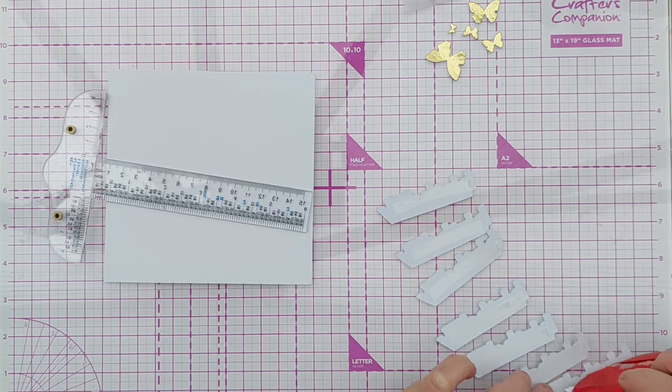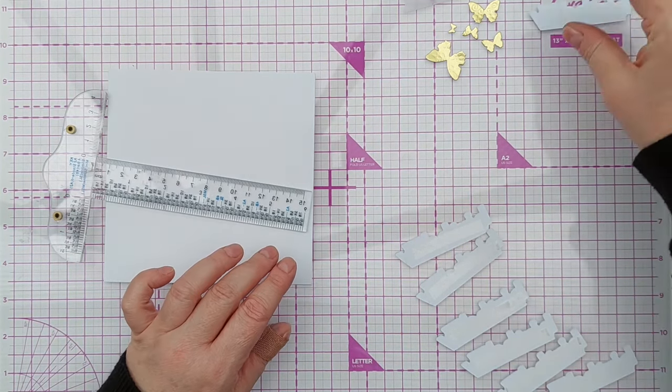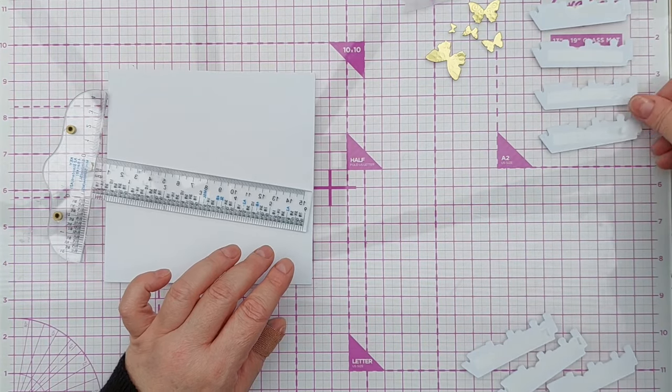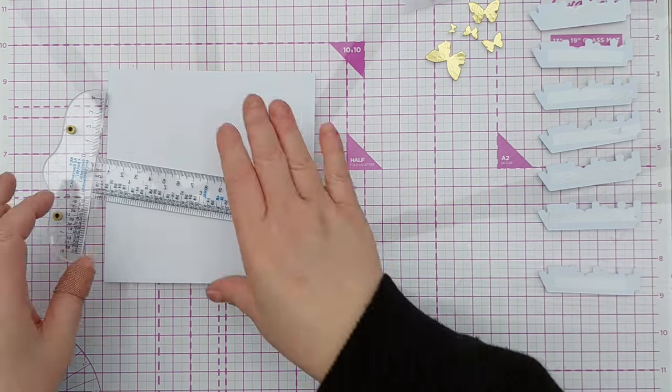When you do something with repeat patterns like the card I'm doing today it's great to batch things so die cut everything first, stamp everything together, stick tape on everything and then you can just go for it.